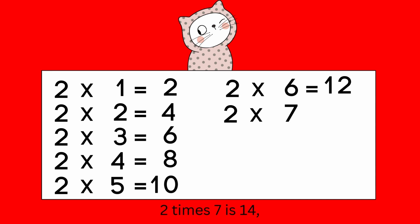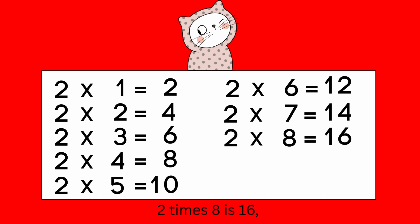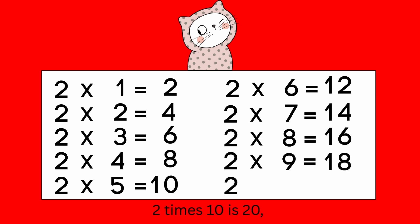Two times seven is fourteen. Two times eight is sixteen. Two times nine is eighteen. Two times ten is twenty.